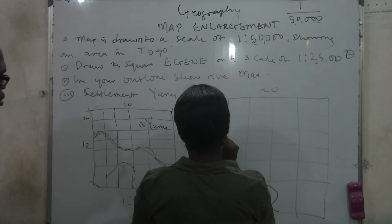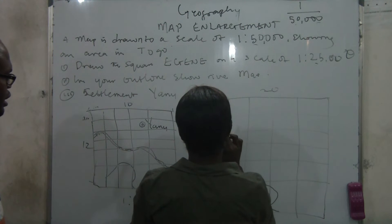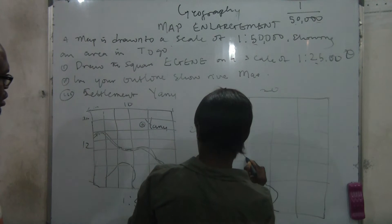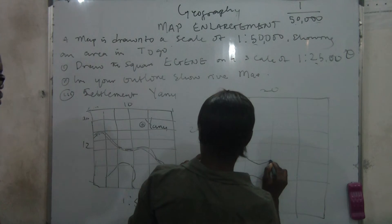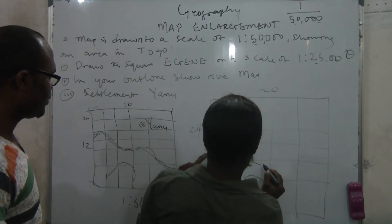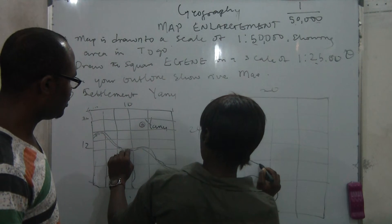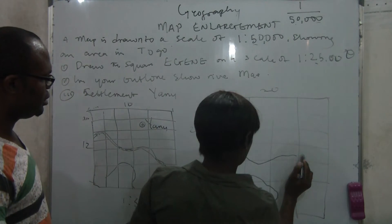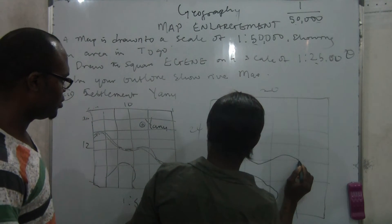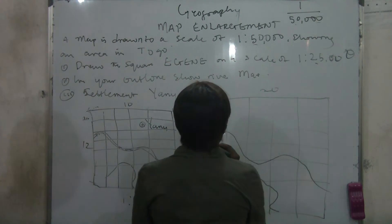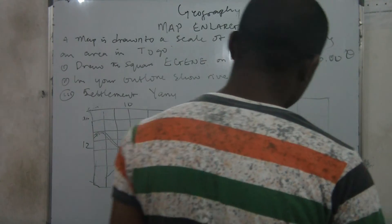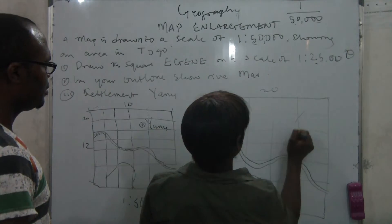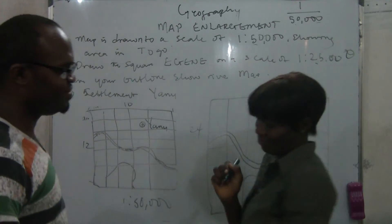The teacher guides a student through drawing the enlarged map, directing them to go down the grid lines properly and stay within the correct lines. After some guidance, the student completes the exercise successfully, and the teacher gives positive feedback.